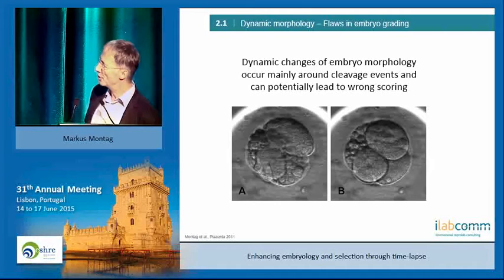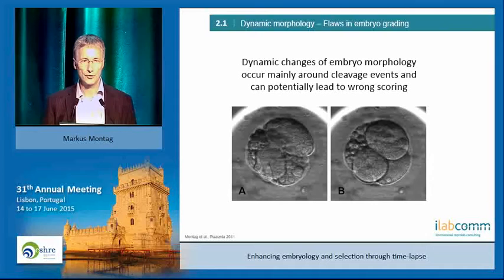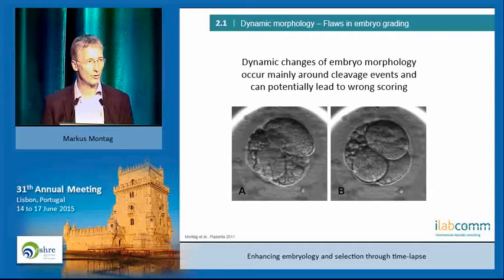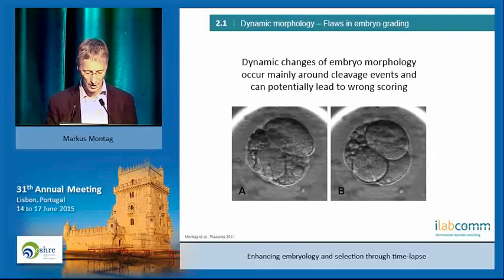Here's a picture intentionally taken on the left side around 42 hours — the time where, following the Alpha Istanbul consensus paper, you would normally look at the embryo. You can see this embryo is just in the cleavage event, and during cleavage events morphology sometimes looks really odd. But if you look at the same embryo a couple of hours later, it looks completely different. If you stick to certain time points, you really may not get the whole picture.